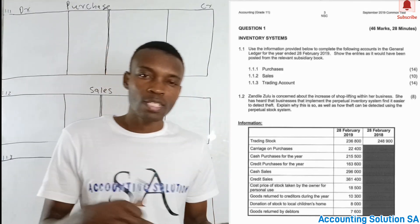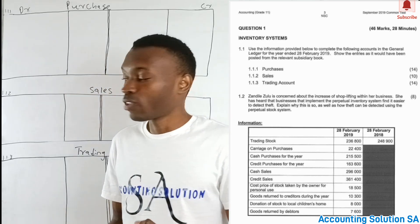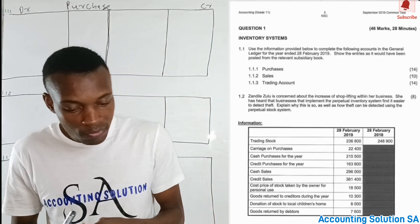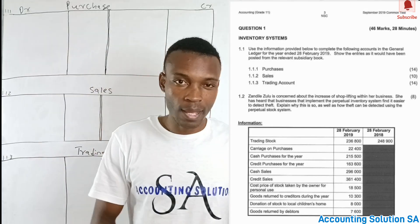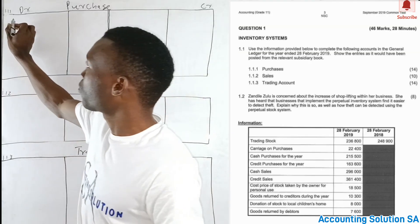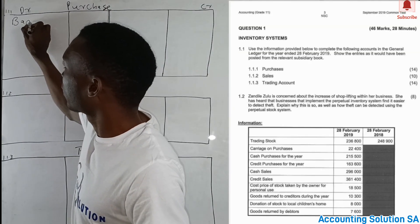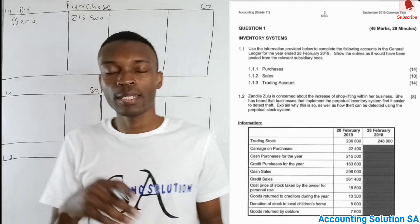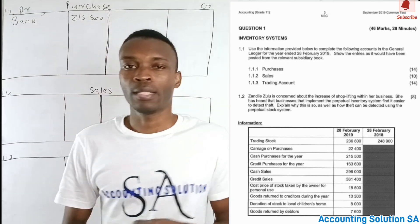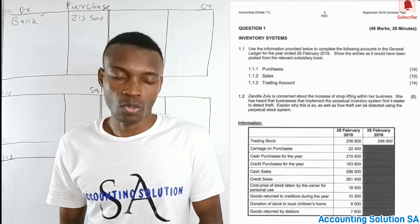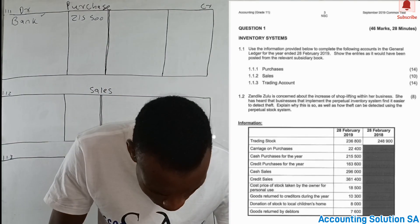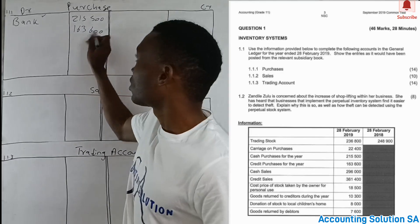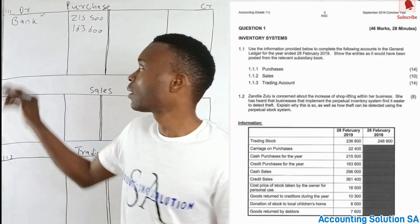Carriage on purchases is the transport we paid for purchases we made, and it goes to the trading account as well. Then we have cash purchases for the year which is 215,500 — this one is for the purchase account. Because it's cash, you use the word 'bank.' Cash purchases amount to 215,500. When they say cash, you use the word bank. When they say credit, you use the word creditors control. The credit purchase for the year is 163,600, so in this case we use the words 'creditors control.'